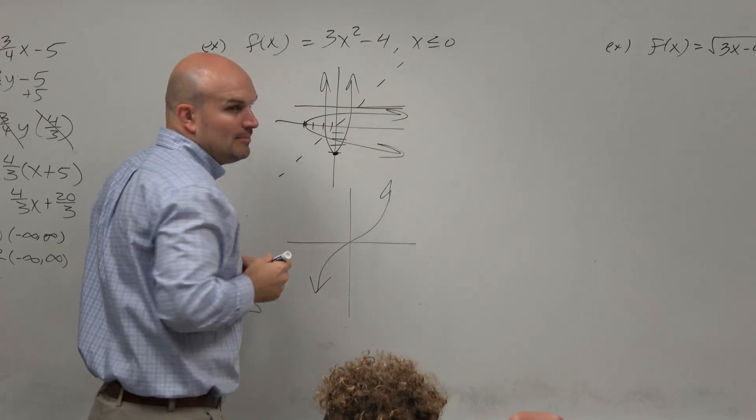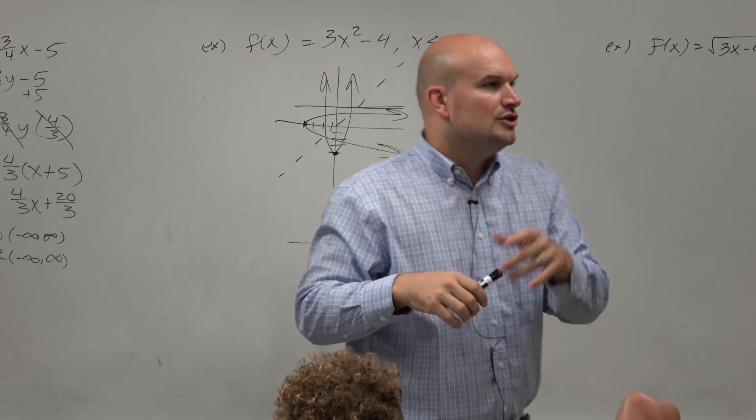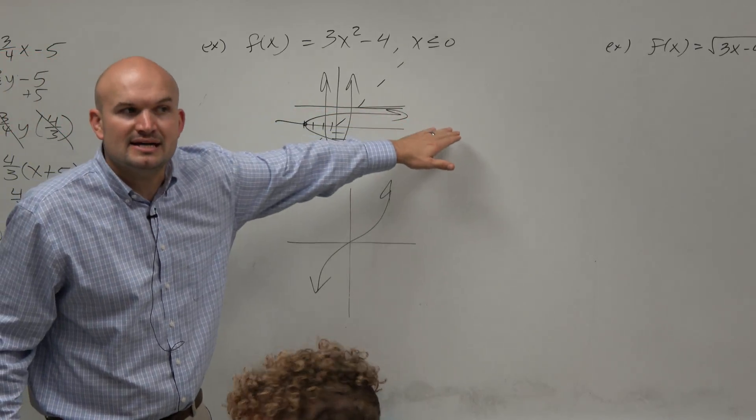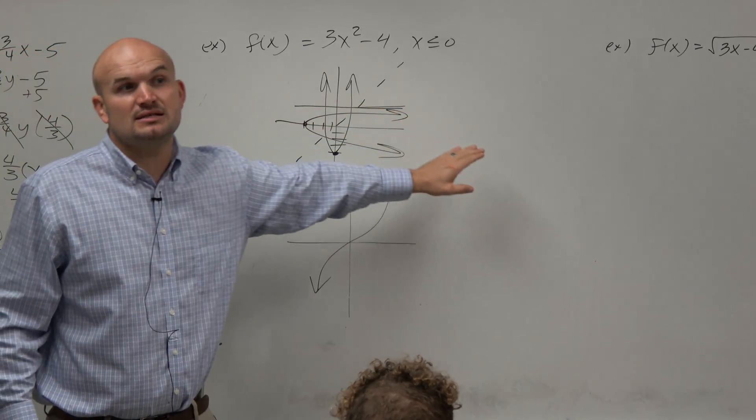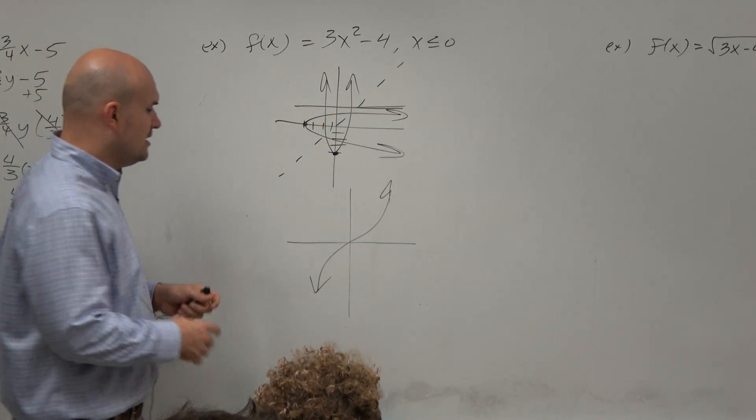And you can also tell by looking at a graph, instead of sleeping, you can tell that they don't pass the horizontal line test. So if a function doesn't pass the horizontal line test, it's not one-to-one.